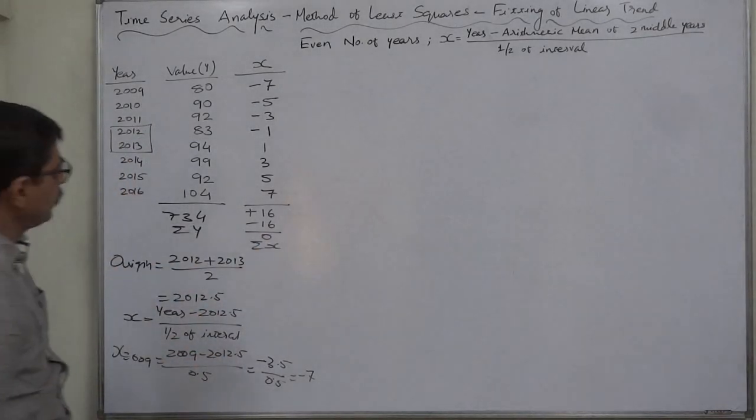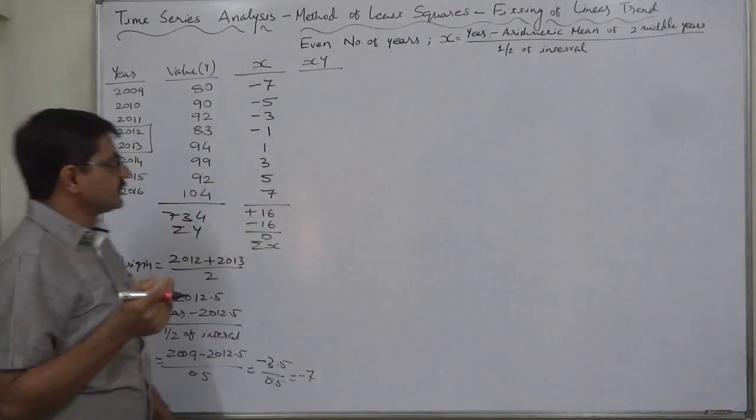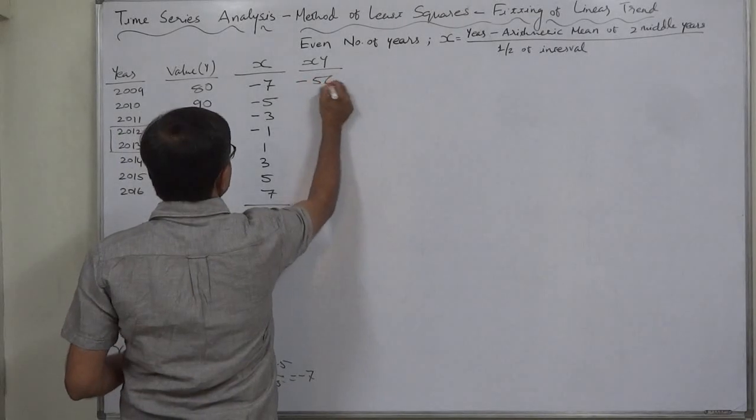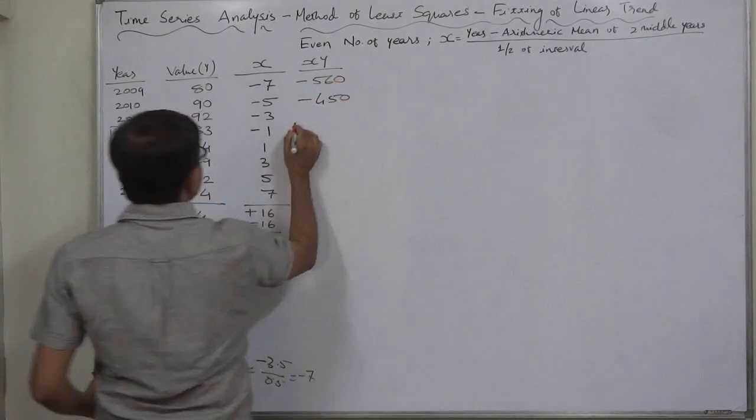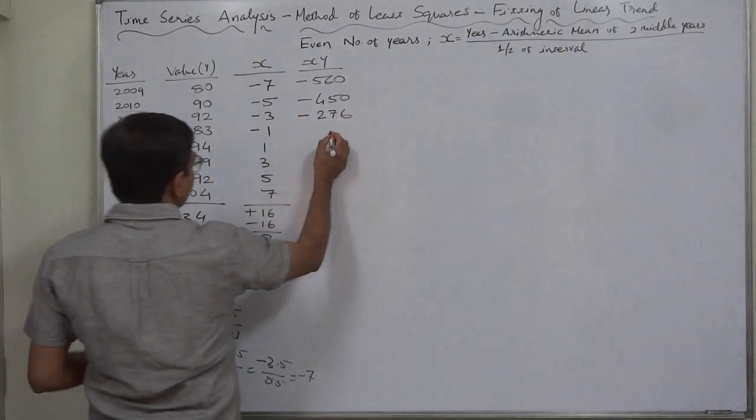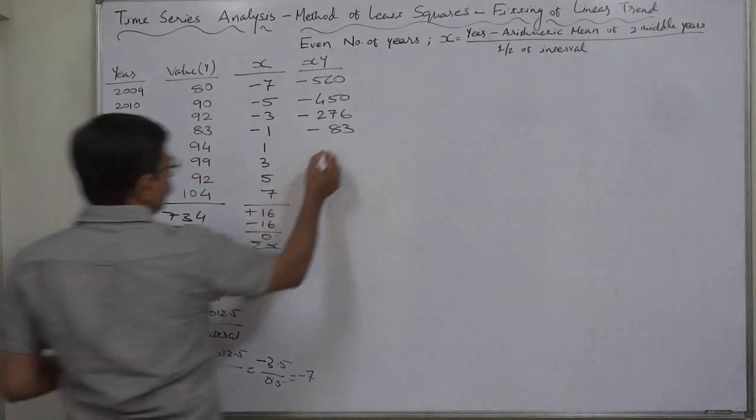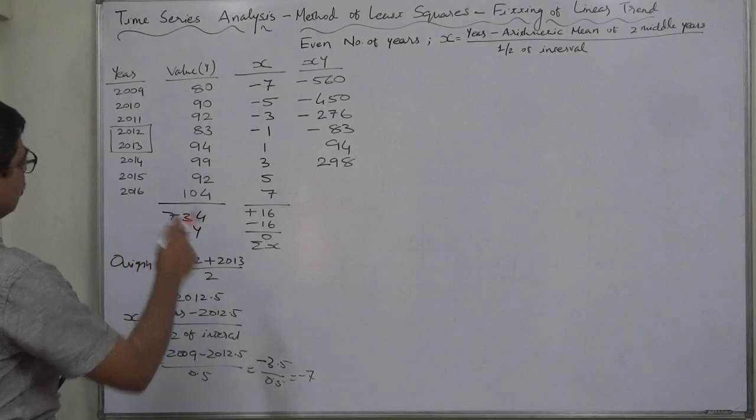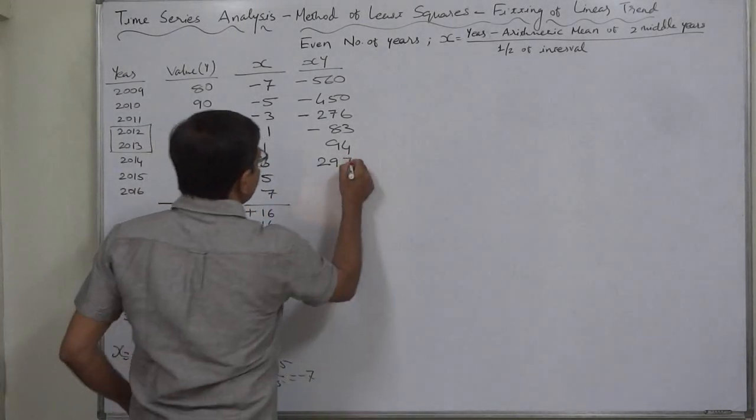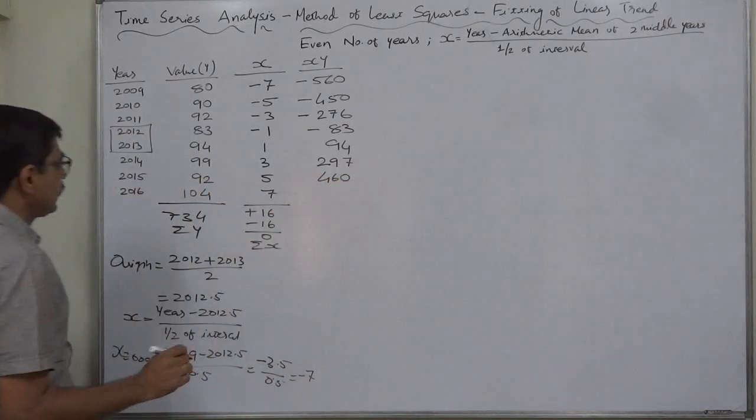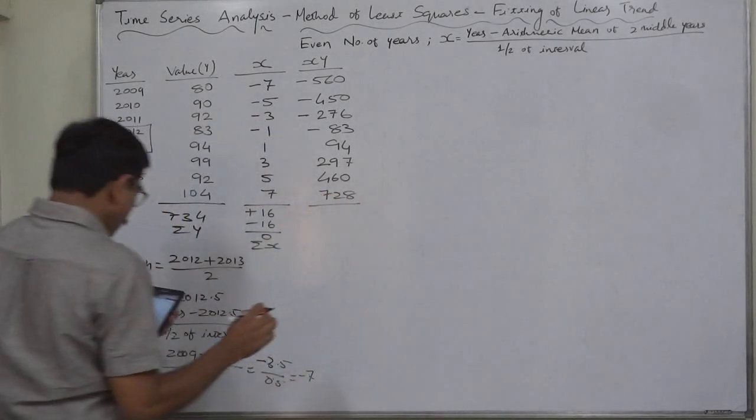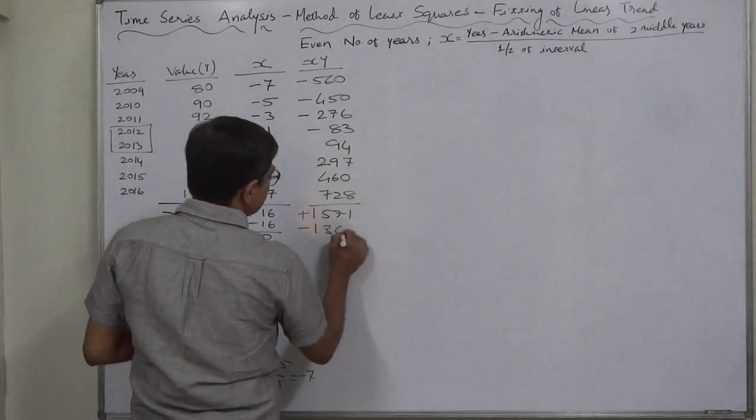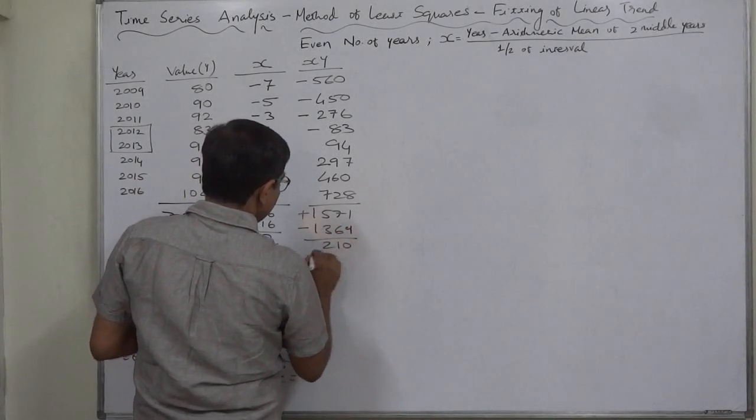That is also a very small checkpoint for you, the students or even the teachers. I have also used personally these kind of checkpoints. Now XY: 80 into minus 7 is minus 560, 90 into minus 5 is minus 450, 92 into minus 3 is minus 276, 83 into minus 1 is minus 83, 94 into 1 is 94, 99 into 3 is 297, 92 into 5 is 460, and 104 into 7 is 728. The positive total comes to 1579 and the negative total comes to 1369. So 210 is sigma XY.